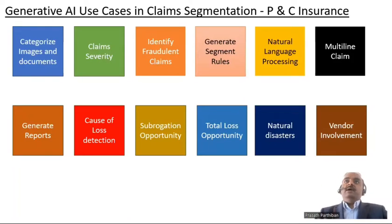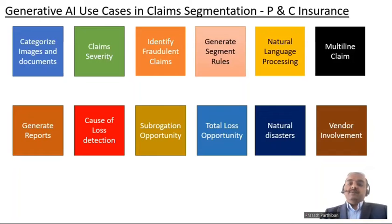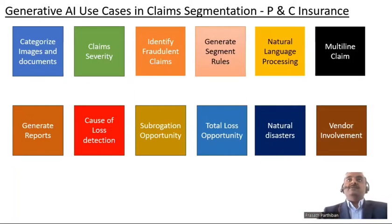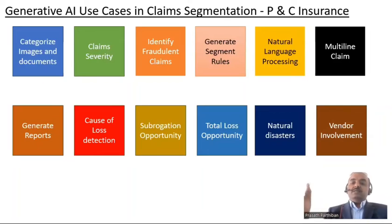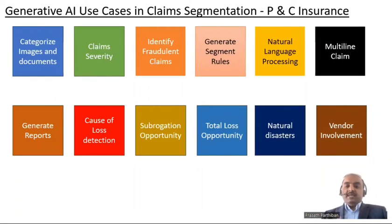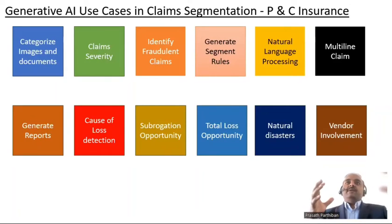Natural language processing — AI can read specific content in a document. If you have 800 pages of document, it is impossible for a human to read the entire document. But if you have a specific terminology or keyword you want to extract from those 800 pages, you can easily do it through NLP, which is an AI functionality, and you can summarize the entire 800 pages into a critical one or two page document.